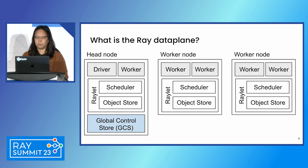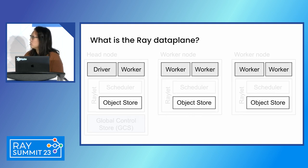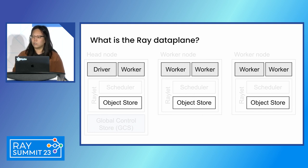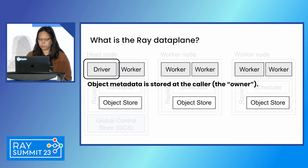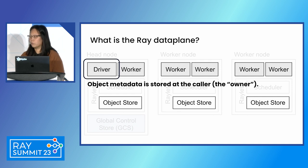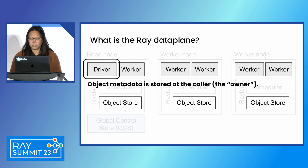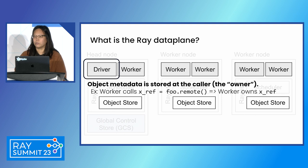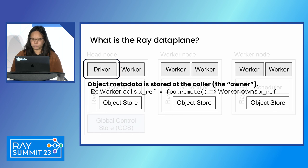To give an illustration of how this works in a typical Ray cluster, the Ray data plane consists of different components. First, we want to think about where the object metadata is stored — this is usually stored at the driver. We call this process the owner, because it owns the metadata related to an object. The way that we assign the owner is based on who created that first object ref. So if you call foo.remote, then you're going to own the object ref returned by that.